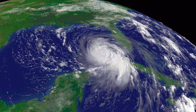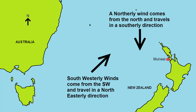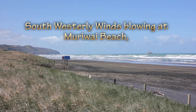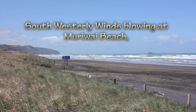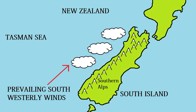For hurricanes, there is a separate scale called the Saffir-Simpson scale. This scale ranges from category 1 to category 5, with a category 5 hurricane being the most destructive, with winds of over 252 km per hour. Wind direction is measured in terms of the direction the wind is coming from. For example, in New Zealand, we have prevailing south-westerly winds, meaning the dominant wind pattern comes from the south-west and heads in a north-easterly direction.